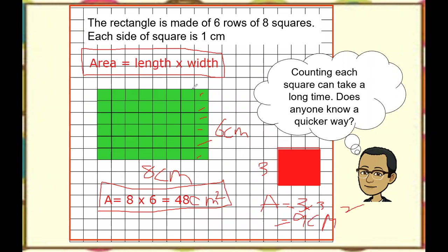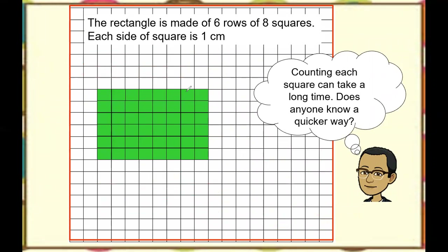This is how to find the area of a rectangle and a square. If squares are given on a grid, just count how many squares are inside the shape — that is the area. Simple.